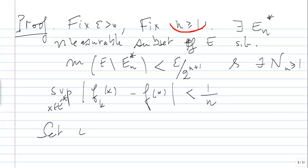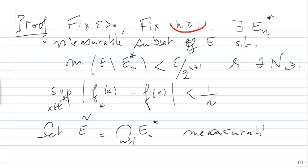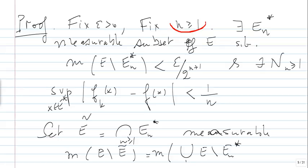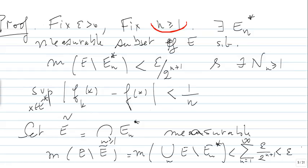Set E-tilde to be the intersection of all the E*_N's. This is measurable because it's a countable intersection of measurable sets, and it's a subset of E. The measure of E minus E-tilde equals the measure of the union of (E minus E*_N), which is less than or equal to the sum of epsilon over 2^(N+1) from 1 to infinity, and this is less than epsilon.